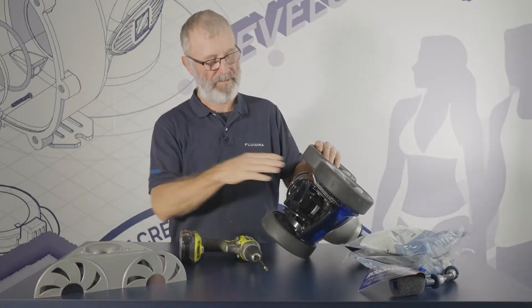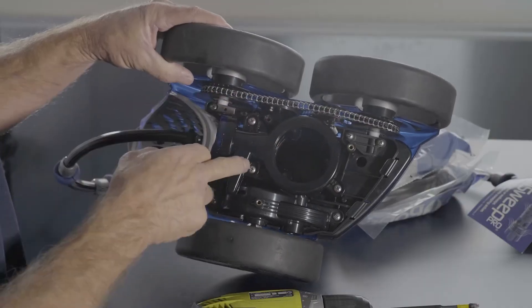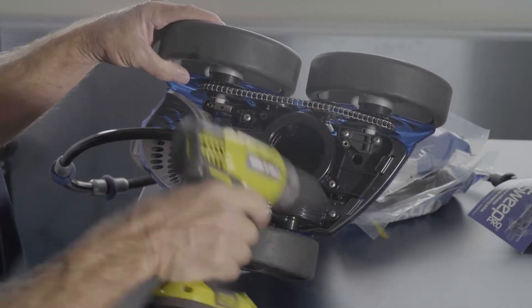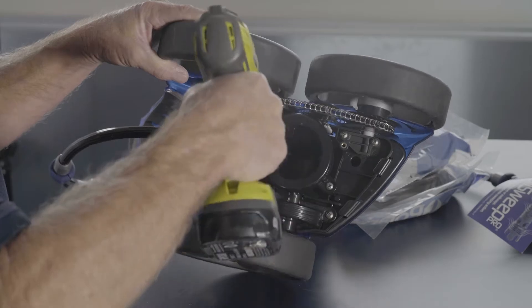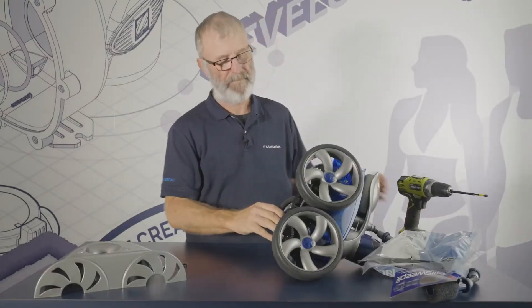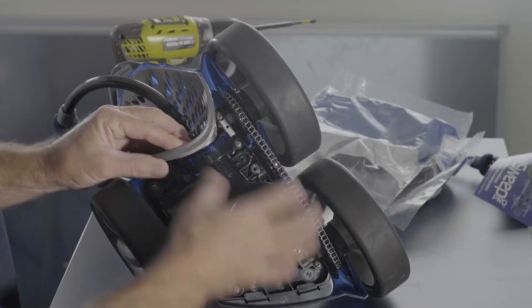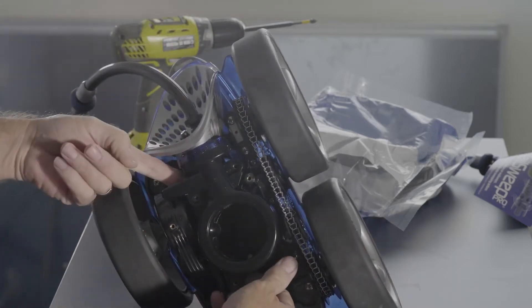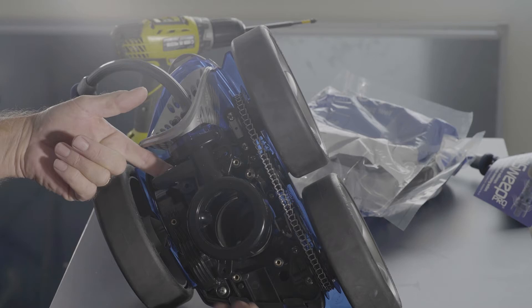Now that we've got the base off, we've got the next three screws which hold the water management system in. You undo those. Now sometimes these can be a little tricky getting out of there but you just lever it out and that's it.